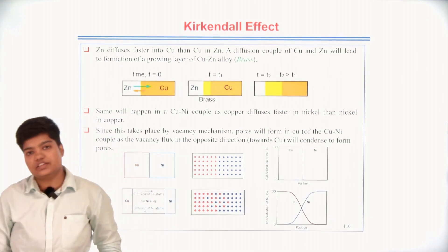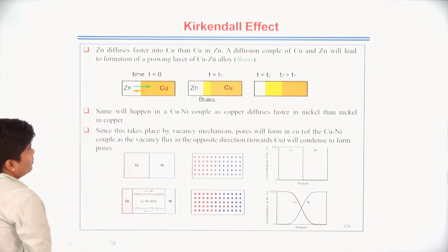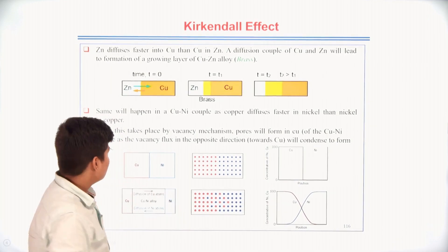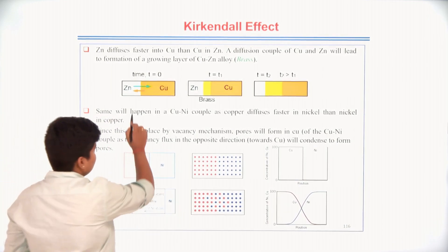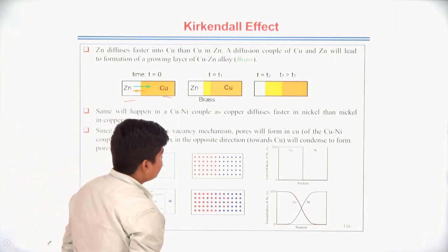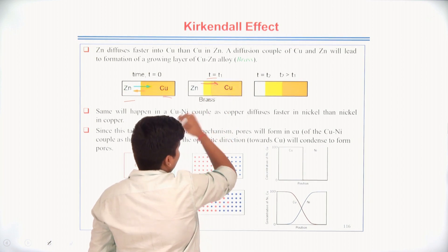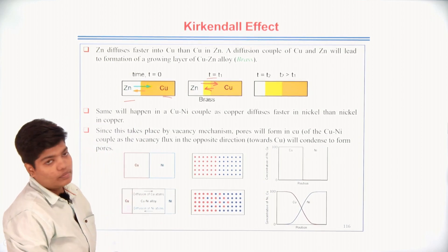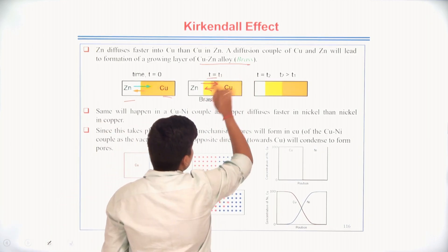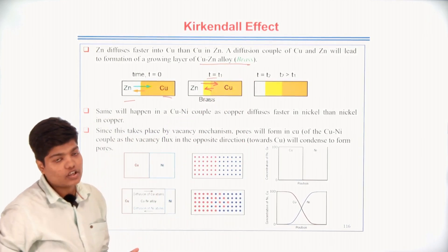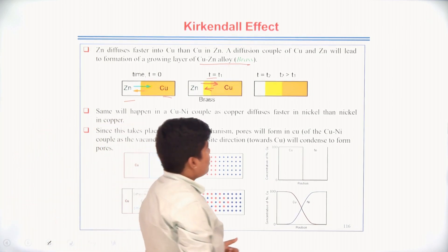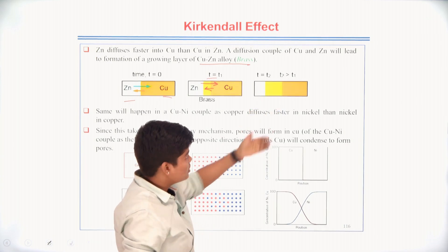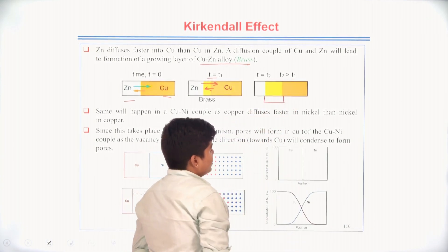For example, let zinc and copper be present. Zinc will move faster than copper because the melting point of zinc is lower than that of copper. At time interval T0, zinc and copper are separate. After some time T1, zinc moves towards copper very fast. After mixing, zinc and copper form an alloy known as brass, which is a copper-zinc alloy. After time interval T2, the middle portion becomes the alloy of zinc and copper.